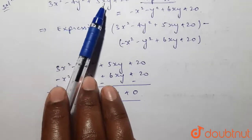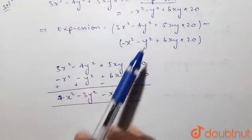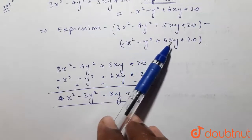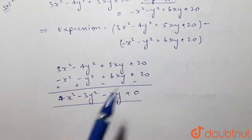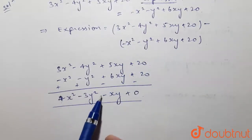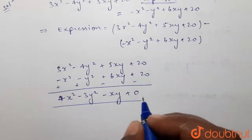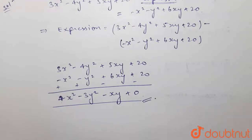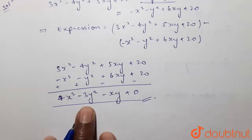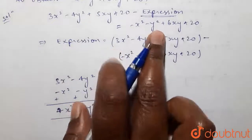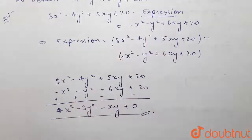So the expression which should be subtracted from 3x² minus 4y² plus 5xy plus 20 to obtain minus x² minus y² plus 6xy plus 20 is 4x² minus 3y² minus xy. This is the answer. When we subtract this expression from the original, we will get the required result.